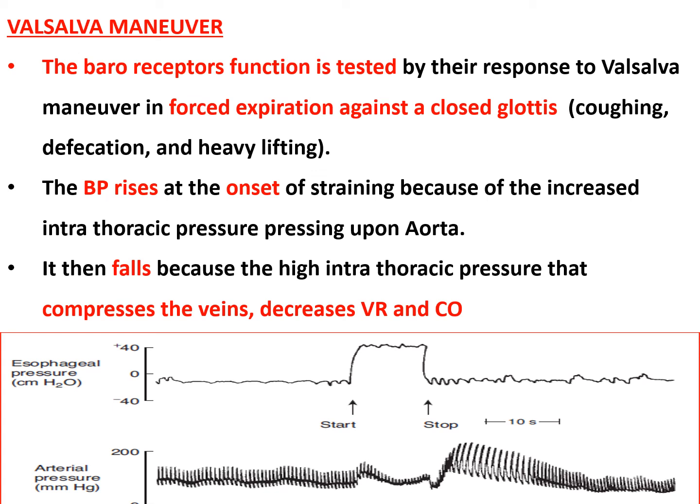To test baroreceptor function, the Valsalva maneuver is used. The person is asked to take a deep breath, close the glottis, and then expire forcefully — similar to coughing, holding breath during defecation, or heavy lifting. Closing the glottis and forcing expiration increases intrathoracic pressure, which presses upon the aorta. Baroreceptor discharge from the aorta decreases, stimulating the vasomotor center, so blood pressure increases in the initial part of the maneuver.